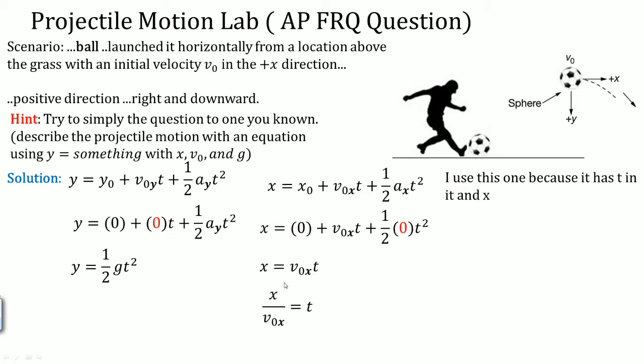Divide v₀x to both sides. You should now get t equals x divided by v₀x. This can now be substituted in for t and you are done with the derivation. y is in terms of a physical constant x and v₀.